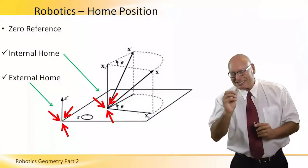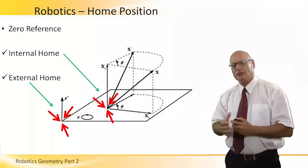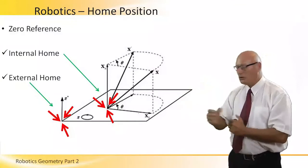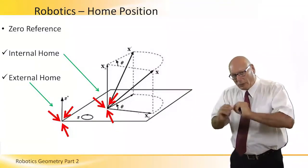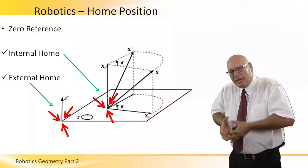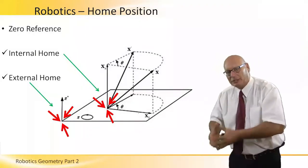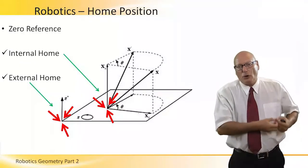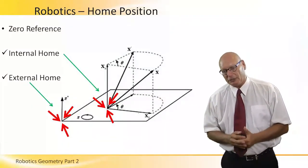This is a summary of the home position of a robot. There is an external home and an internal home. Internal home is the zero, zero, zero of the home base of the robot itself as a machine. External home is the zero, zero, zero home base of the environment in which the robot is operating.